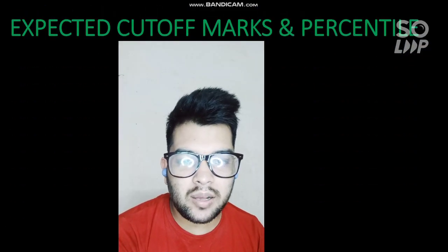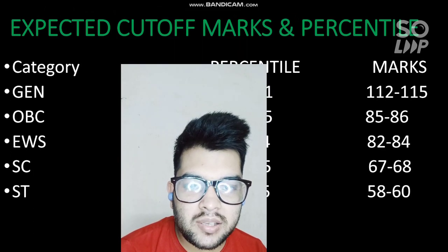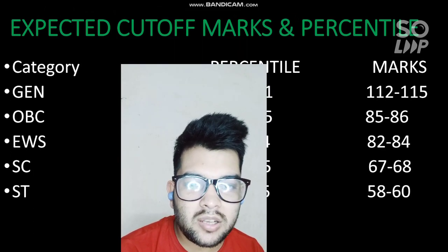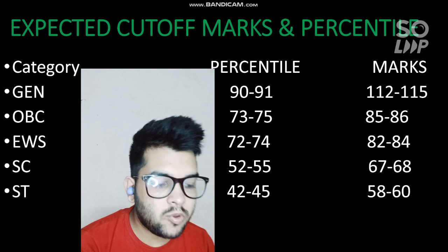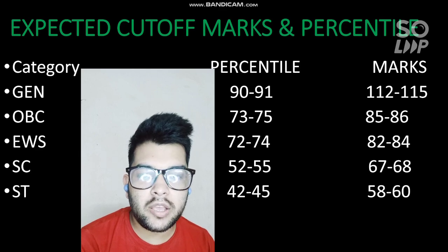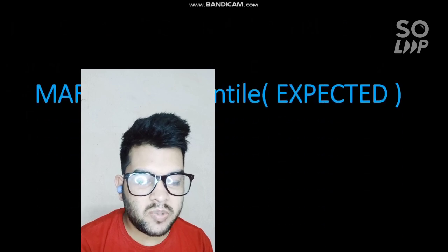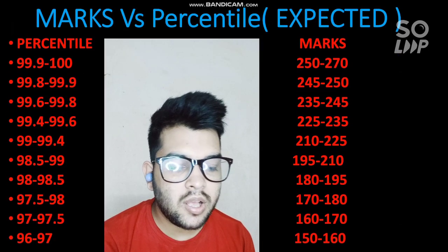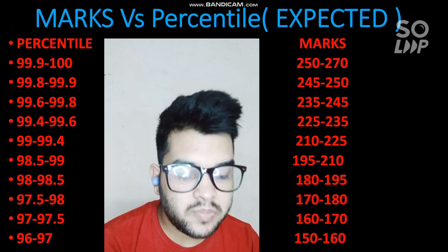Regarding the expected cutoff marks and percentile: the percentile will remain the same for all shifts and attempts, but the marks will differ based on each shift's difficulty level. In each shift analysis video you'll get expected cutoff marks category-wise. For the General category, you need to score around 89 to 100 marks to be safe for JEE Advanced. You can check other categories by pausing this video.